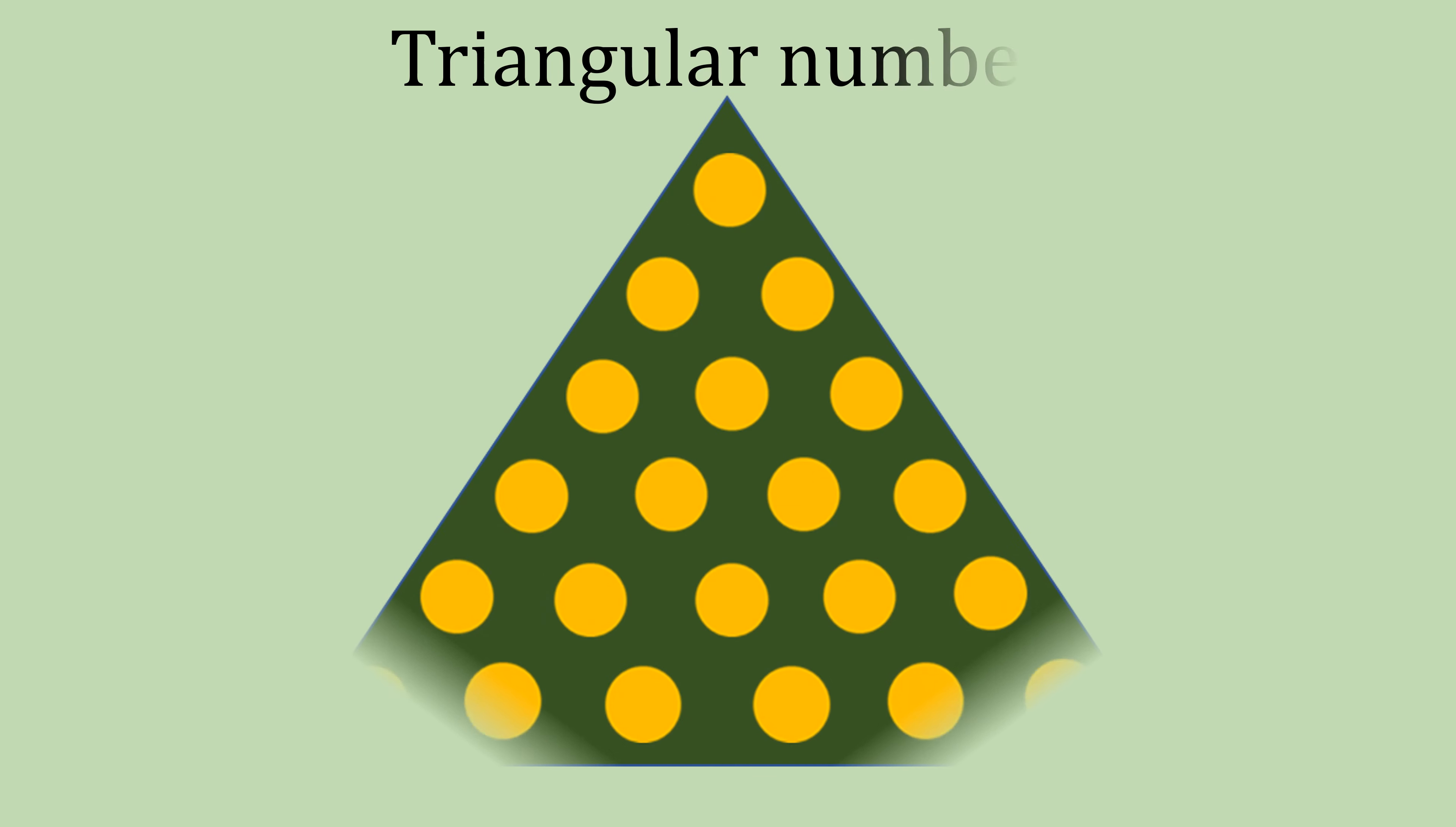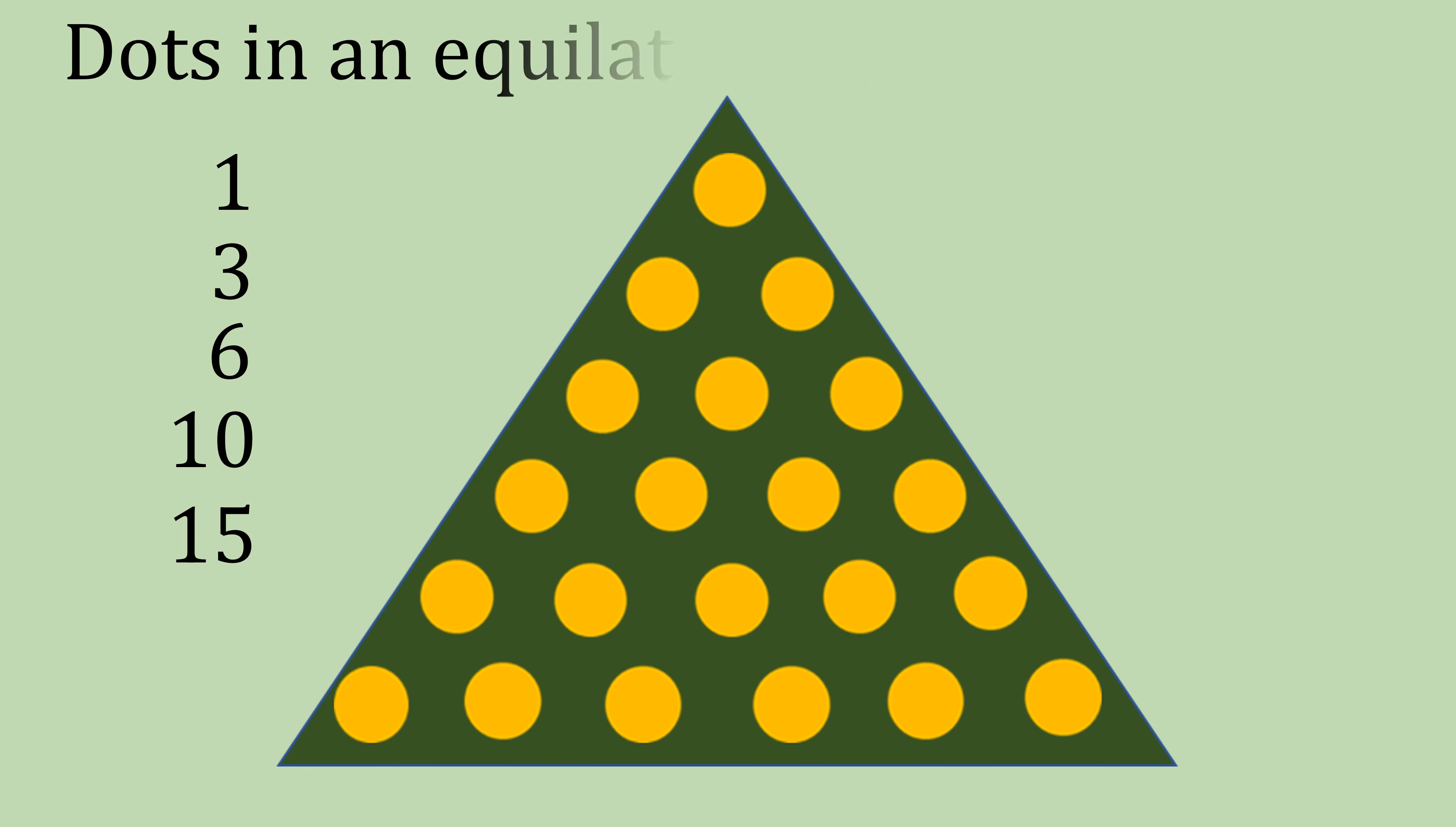So triangular numbers, let's remind ourselves what they are. They are the number of dots in an equilateral triangle. So the first dot has its own triangle. If we add a row, the total is three dots. Continue and add another row and we have six. The next row would equal 10. Then if we add one again, the next row would be 15.